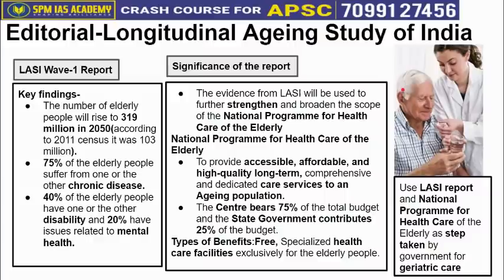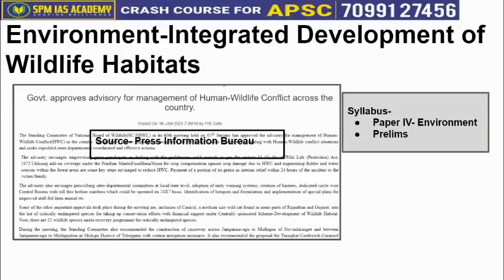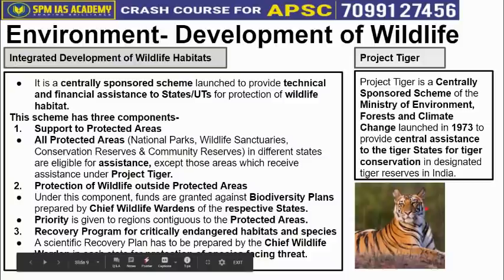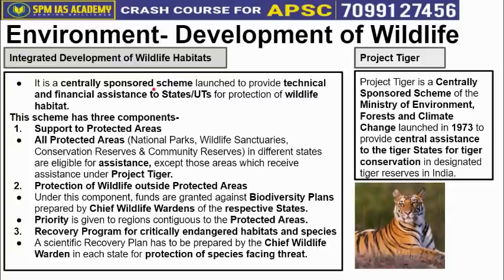The next article is from the environment segment — it is about Integrated Development of Wildlife Habitat. This topic is important from Paper 4, Environment. This is a centrally sponsored scheme where the central and state governments work together. The central government provides technical and financial support to all states and union territories to protect wildlife habitats within their states.